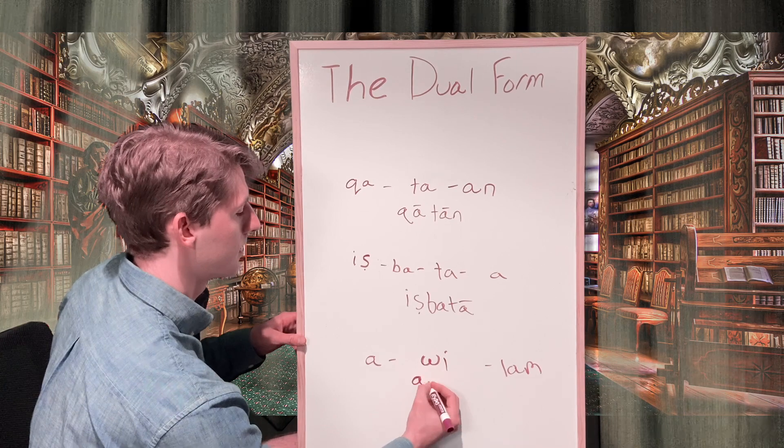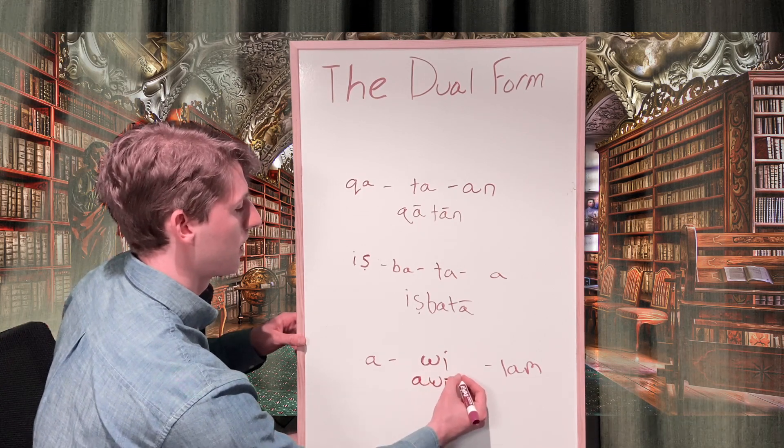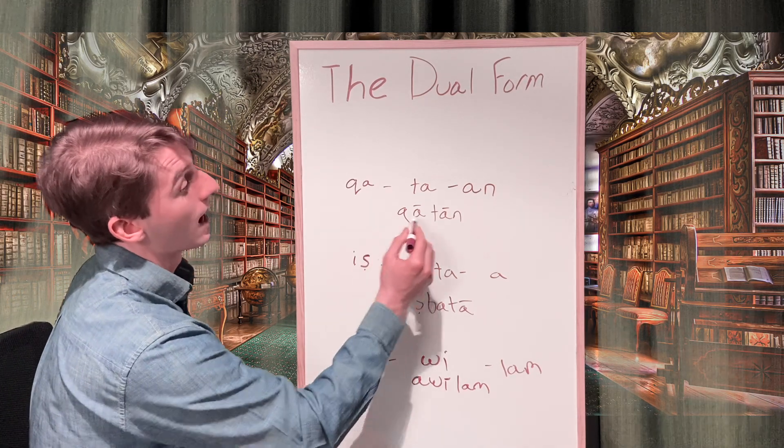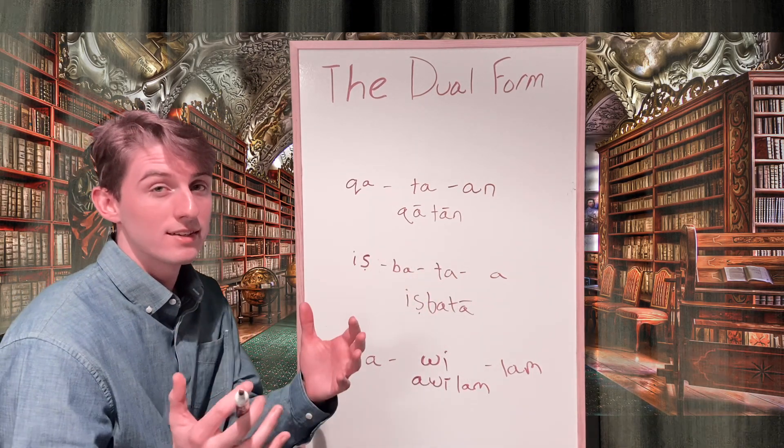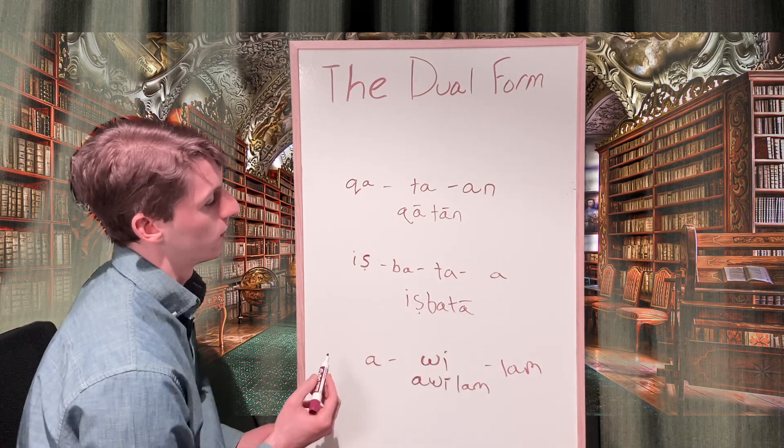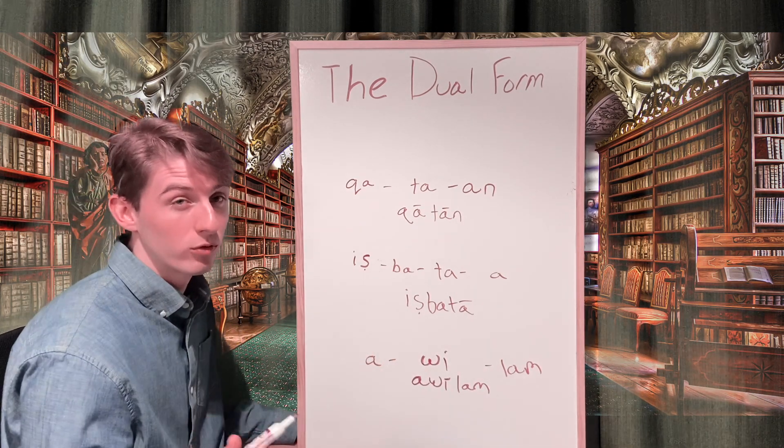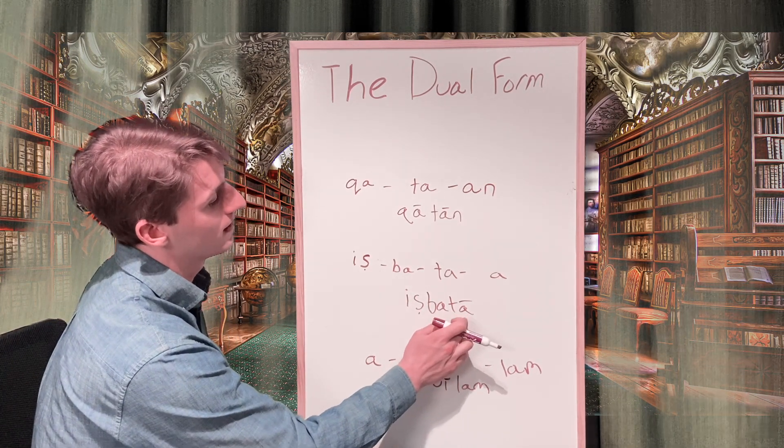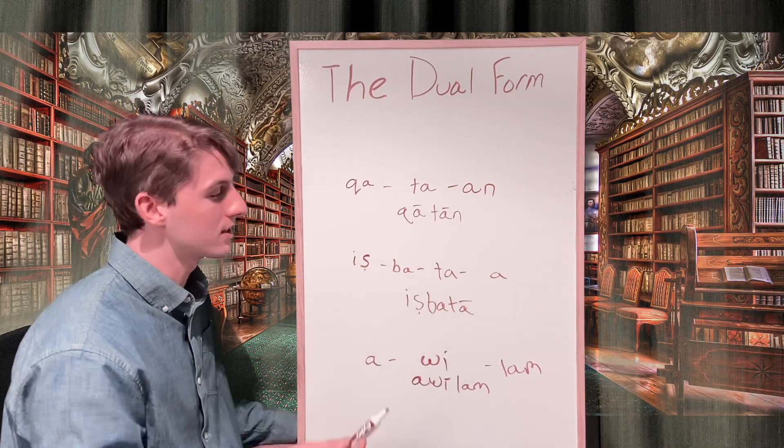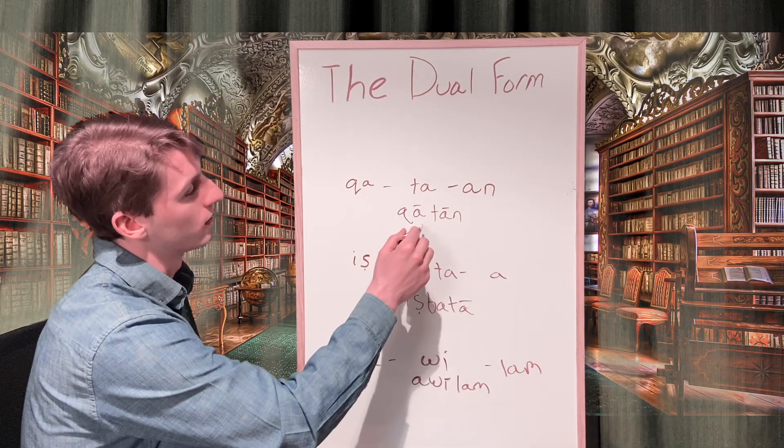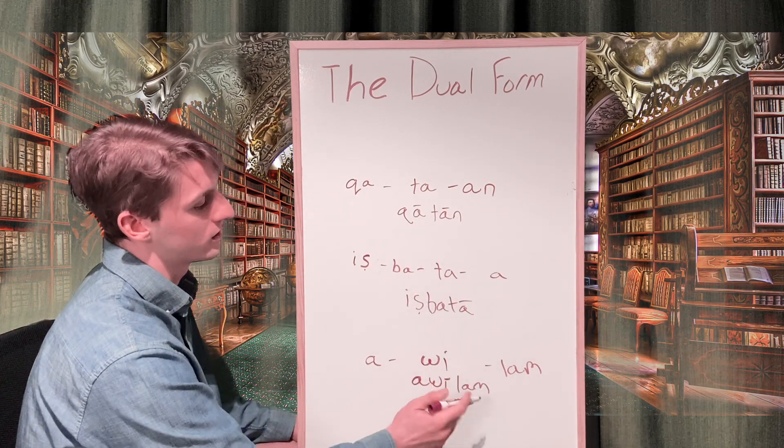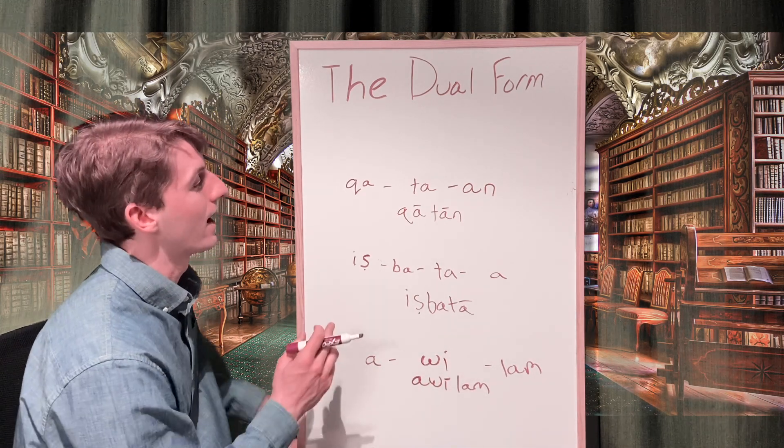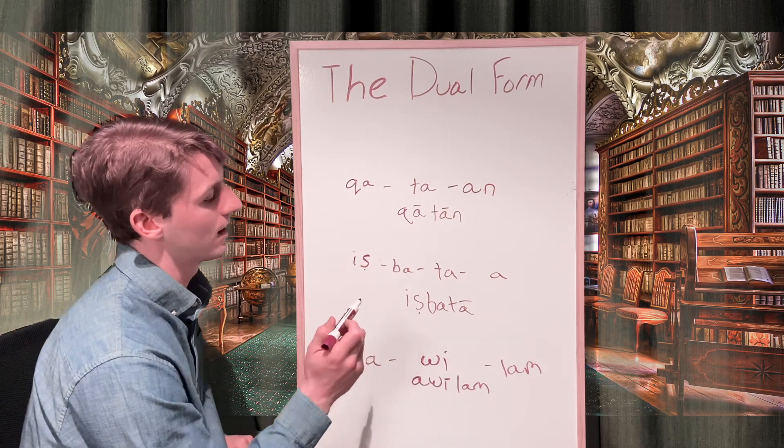Our last is going to be awilam. We can translate this as katan meaning two hands in the nominative, itzbata which is a preterite form of sabatum which means to seize with a feminine plural ending so that's suggesting that this should be in agreement with the dual nominative, and awilam which is in the accusative. All together we can translate as two hands seized a man.